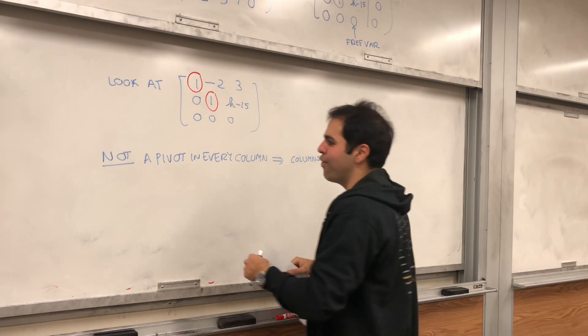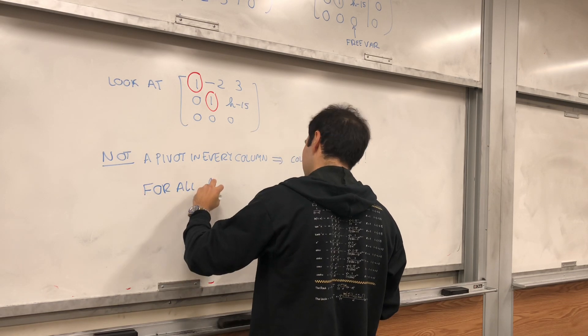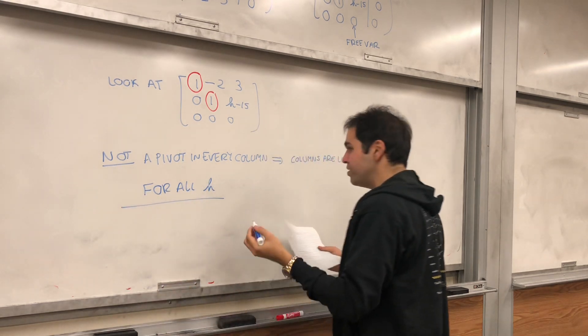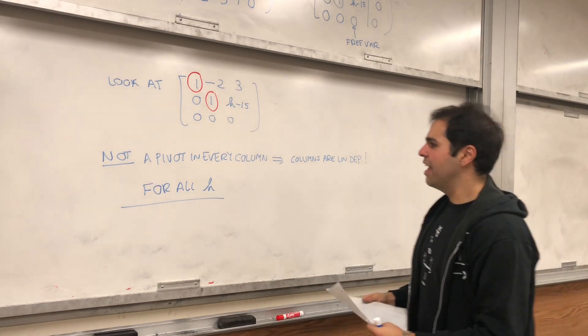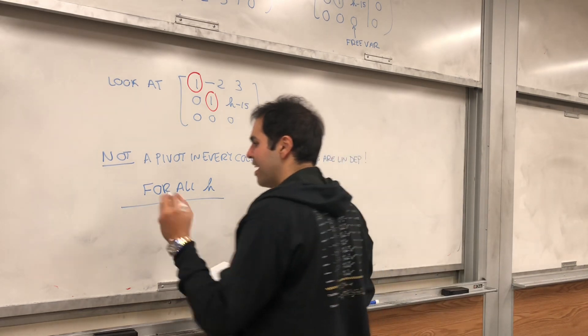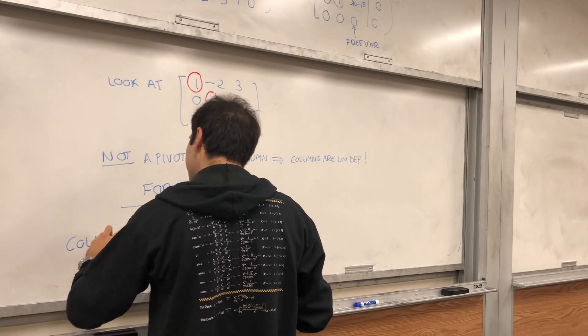And this means that the vectors are linearly dependent. So the answer is for all h. Interestingly, for all h, this is linearly dependent. And let me sort of summarize that by what's called the column theorem.